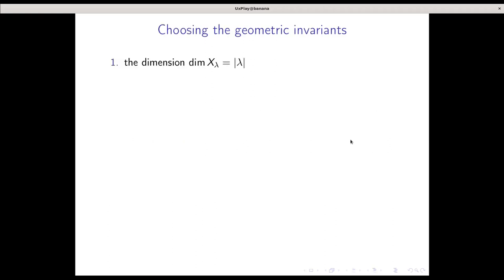My geometric invariants start out with the dimension of X_lambda, which is the size of lambda. Then I'll consider in some cases the ranks of the Chow groups, which in terms of lambda correspond to the number of sub diagrams of a given size.